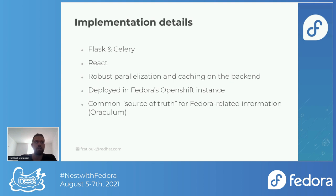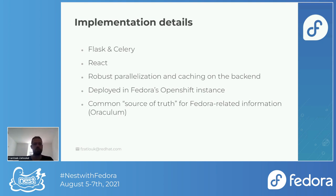One of our long-term goals is to make Oraculum a common source of truth for Fedora-related information. We aim to build an easy-to-use, easy-to-understand API where you can query anything related to Fedora — for example, what are the current Fedora releases, or what versions of package A are in all Fedora releases. This is something Pagure is already using today: if you use distgit and look at the version table of some package, that data is pulled from Oraculum.